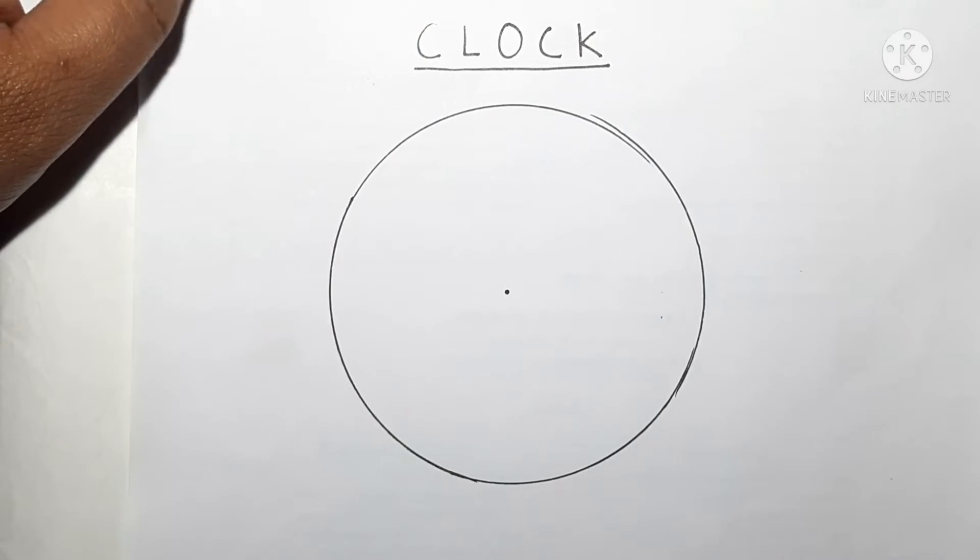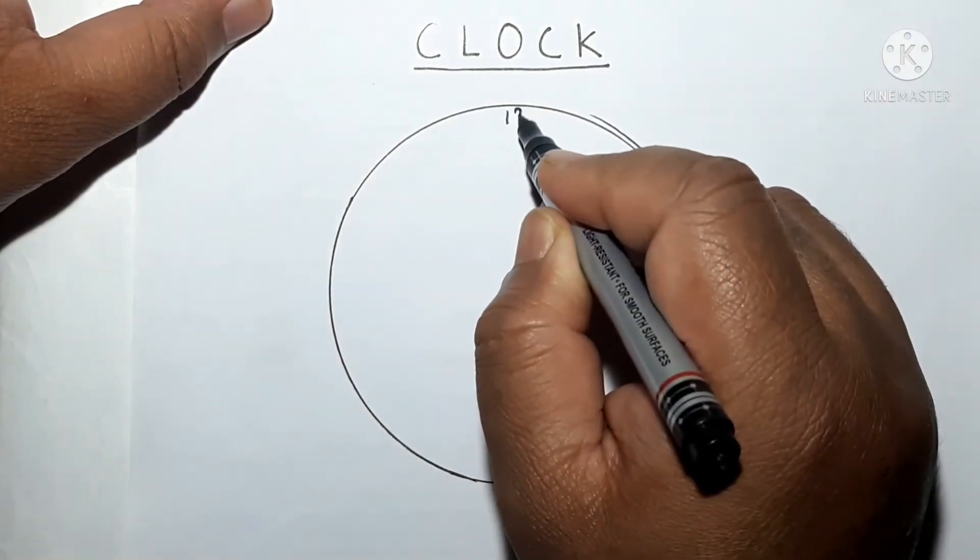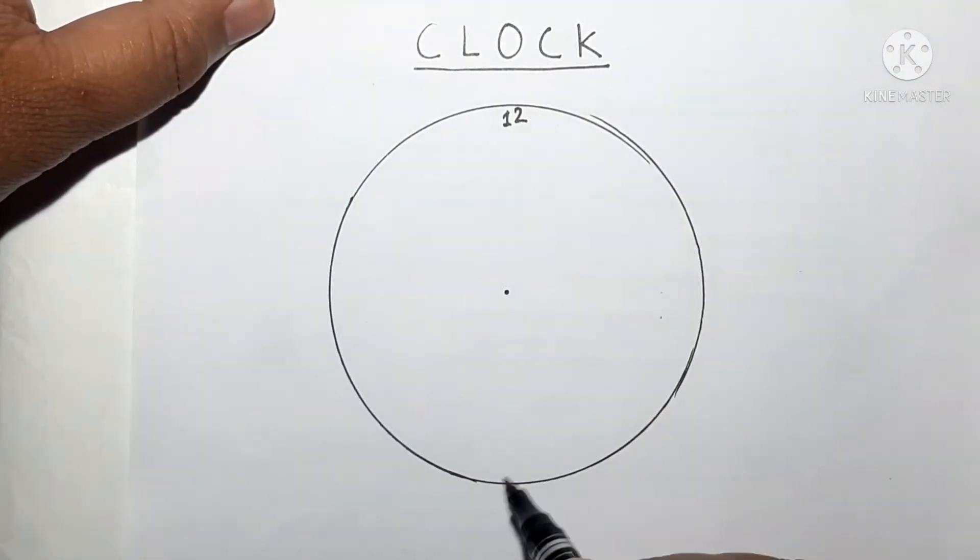So this is my center. Just above this center you will write here 12, and straight below this 12 you will write here 6. So 12 and 6 are done.